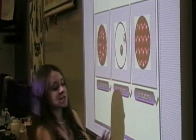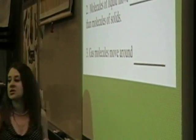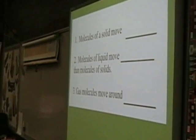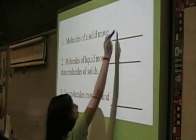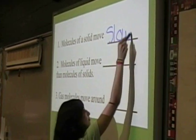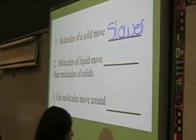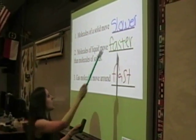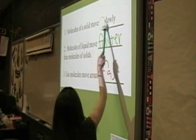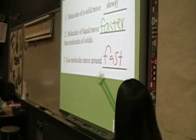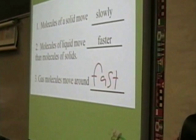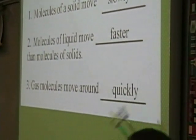We're going to take a look at the movement of these molecules and I'd like you to do some writing now. Come on up and tell me — molecules of a solid move what? Would you say they move fast? Would you say they move slow? Ramon. Here's how we're going to check it. We're going to erase your answers. So slow — is that correct? Slower? Yes. Very good. Molecules of a liquid move faster? Yes, they do, faster than molecules of solids. And gas molecules move around fast, quickly. Very good.